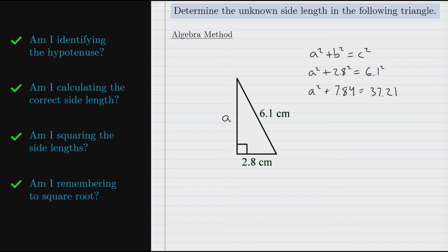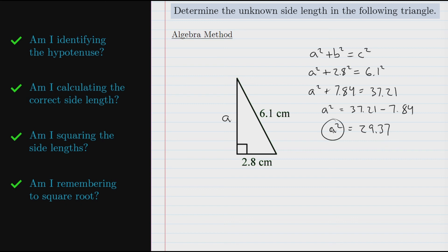And we can isolate a. We'll start by subtracting 7.84 from both sides of our equation. The last question says: am I remembering to square root? It's easy to forget and think that 29.37 is the final answer, but remember that's the value of a squared. We need to find the length of side a, so we use the inverse operation of squaring, which is square rooting. The square root of 29.37 is approximately 5.4.